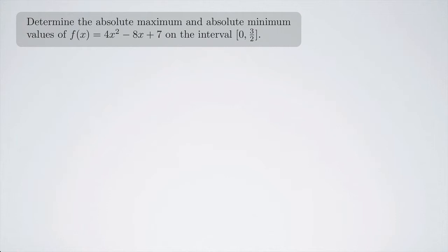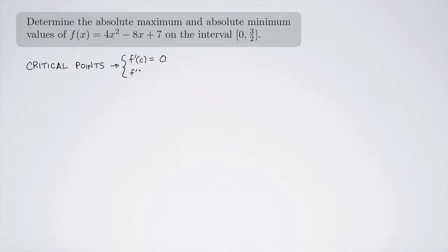When looking for absolute maximum and absolute minimum values, we look at two things. First, we look at critical points. Critical points are either places where the derivative at that point is 0, or the derivative at that critical point does not exist. In addition to critical points, we look at the endpoints of the closed interval.